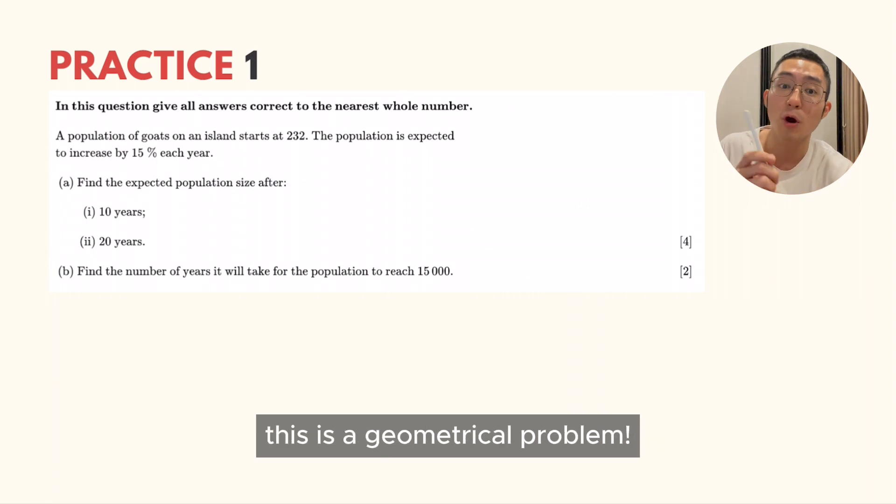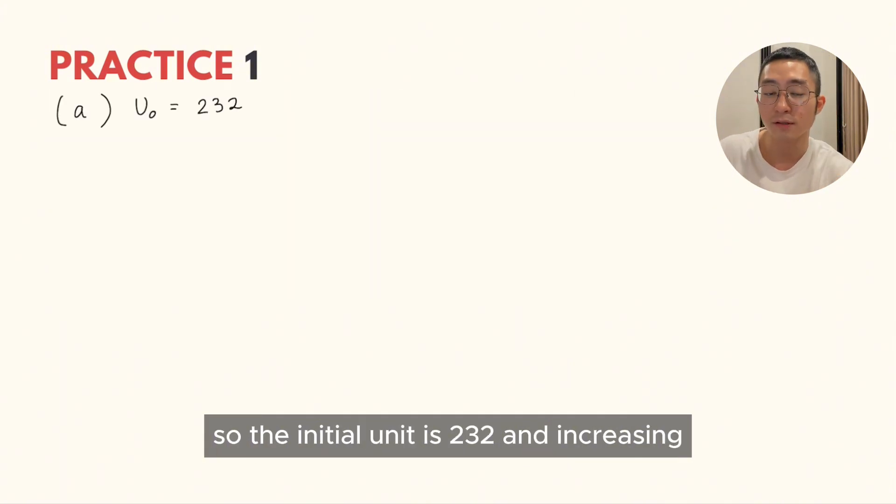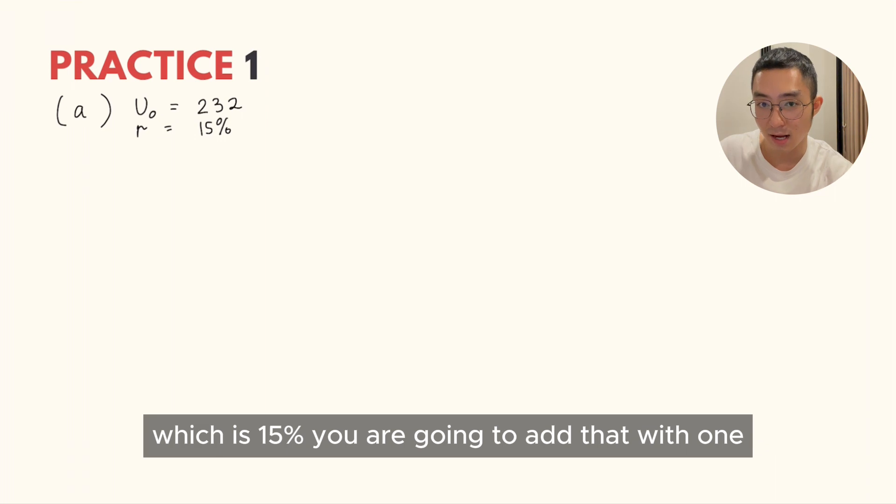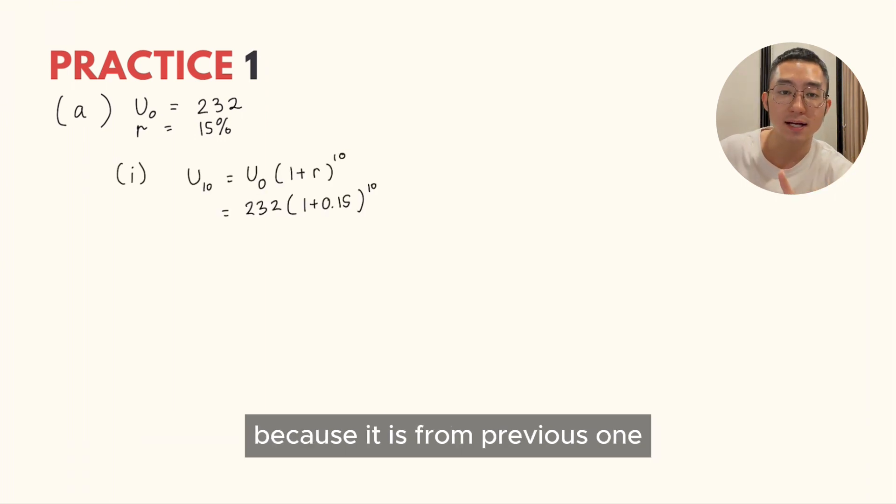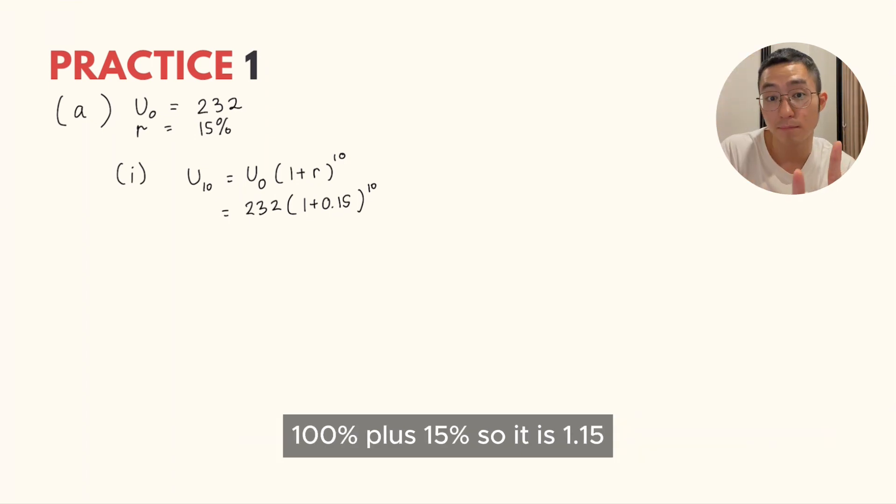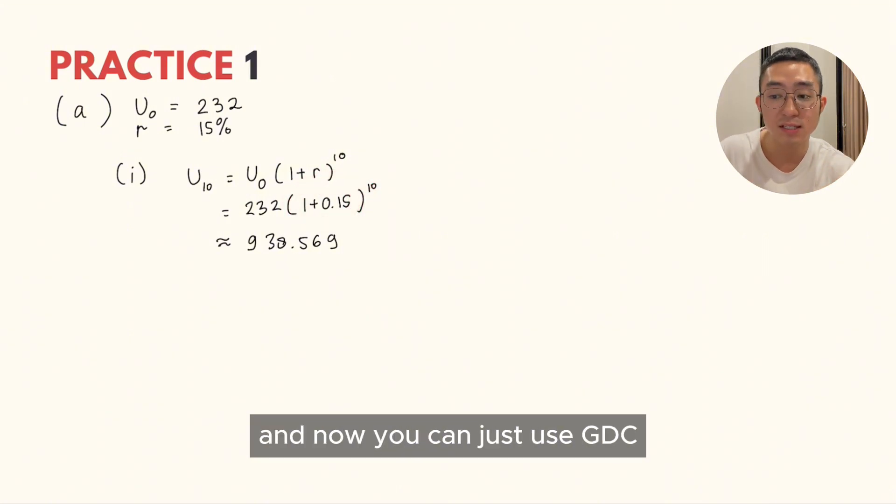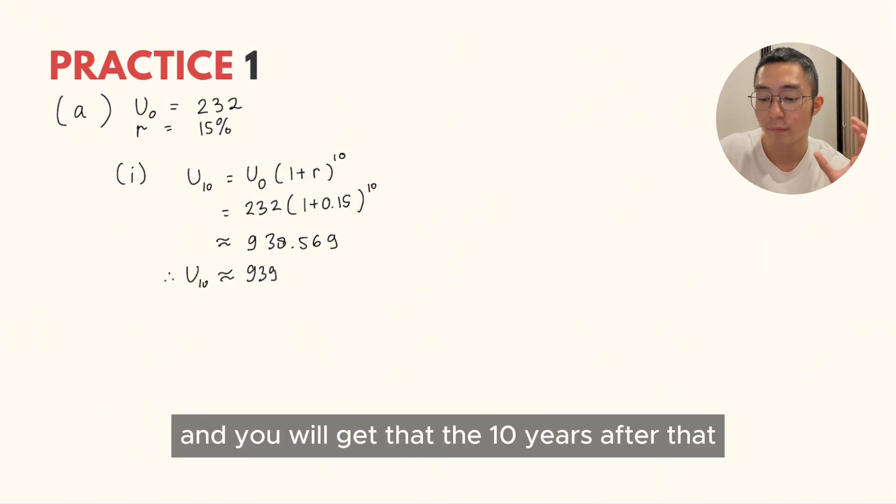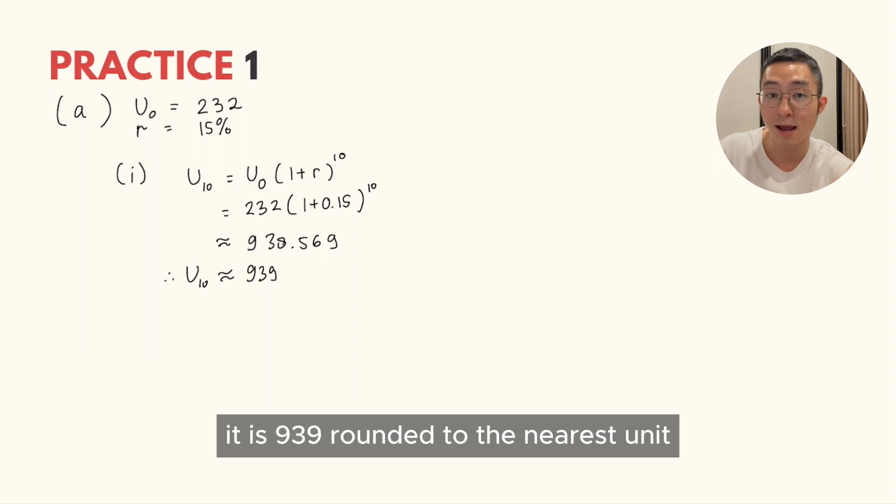This is a geometrical problem. The first unit is 232 and increasing 15%, you are going to add that with 1. Because it is from the previous one, 100% plus 15%, so it is 1.15. You can just use GDC and you will get that 10 years after that, it is 939, rounded to the nearest unit.